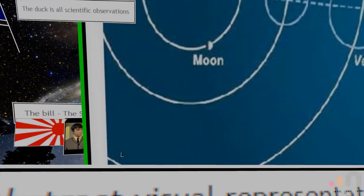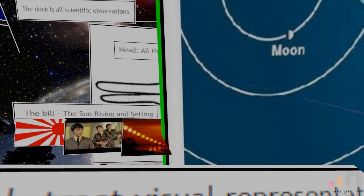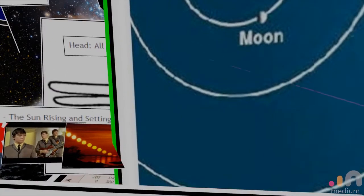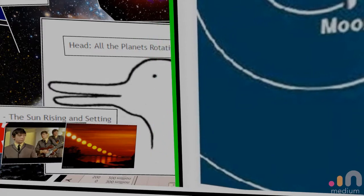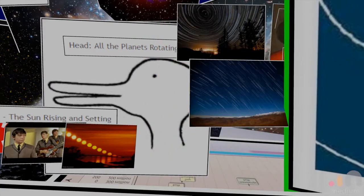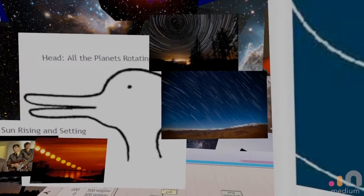The bill of the duck is the sun rising and setting. Because the sun sets and rises, that means we are at the center of the universe. Here we go, we have a head. The head is all the planets rotating around us because we're the center of the universe. And if you look at this, how can you possibly argue that this is not a picture of a duck?